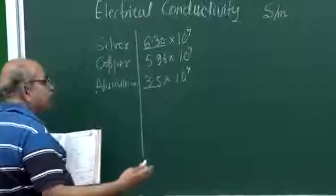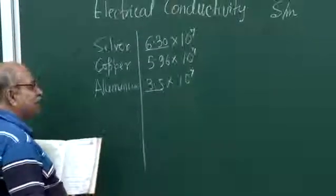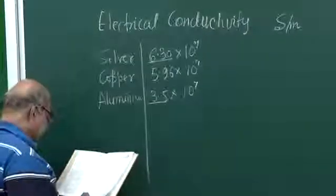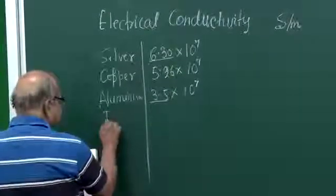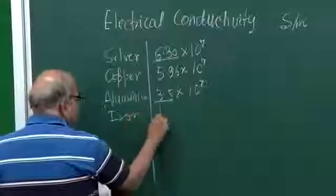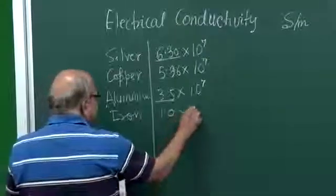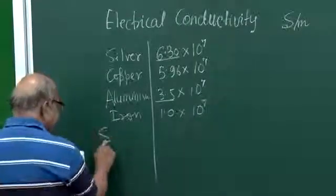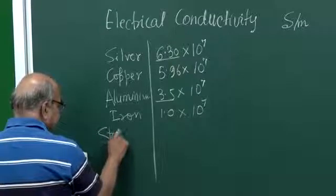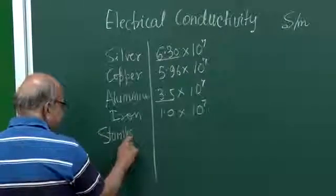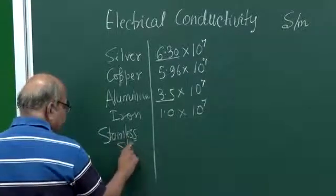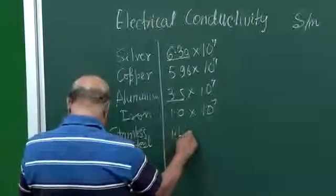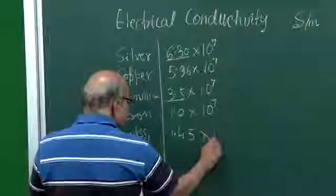Aluminum is not that costly. But then, yes, the conductivity is lower. Iron is 1.0 into 10 power 7. Even lower. Stainless steel, this conductivity is 1.45 into 10 power 6.